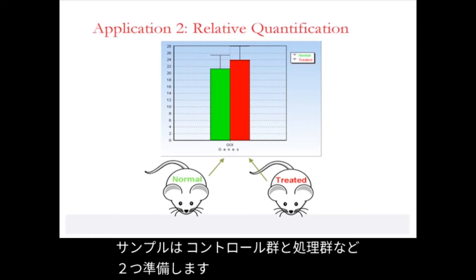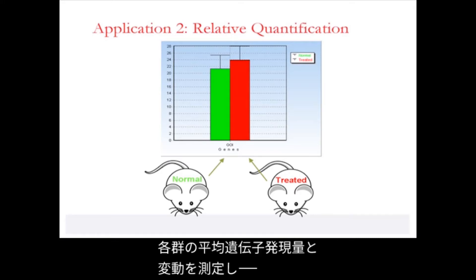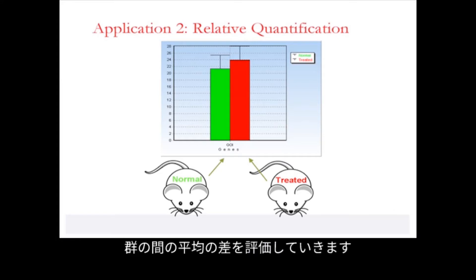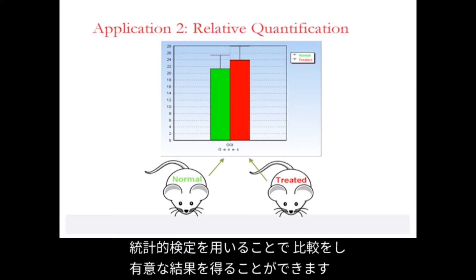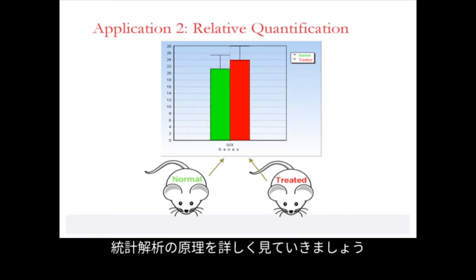Samples are divided into two groups, such as untreated normal controls and treated. Mean gene expression and variations are measured within each group, and the differences between the means of the groups is evaluated. Statistical tests are available to accomplish this comparison and arrive at statistically significant results.